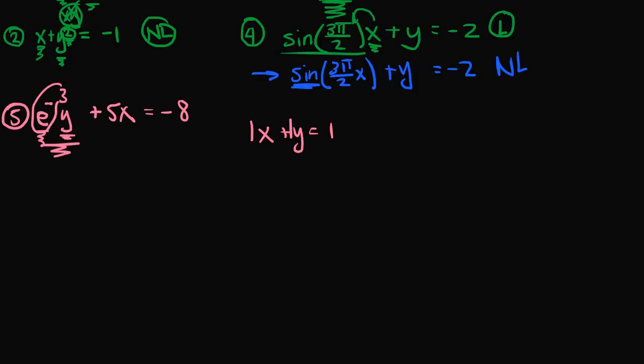That constant, e raised to the negative 3rd power, is just some number multiplied by y. It's not involved in any trigonometric, logarithmic, or exponential functions. It's not 1 over y, and it's not multiplied with another variable. The same goes for 5x: x is only raised to the first power, not multiplied with any other variable, not in the denominator, and not a root. So example 5 is linear.